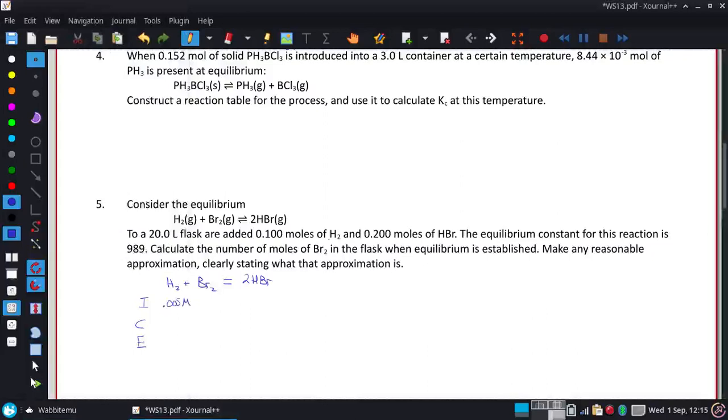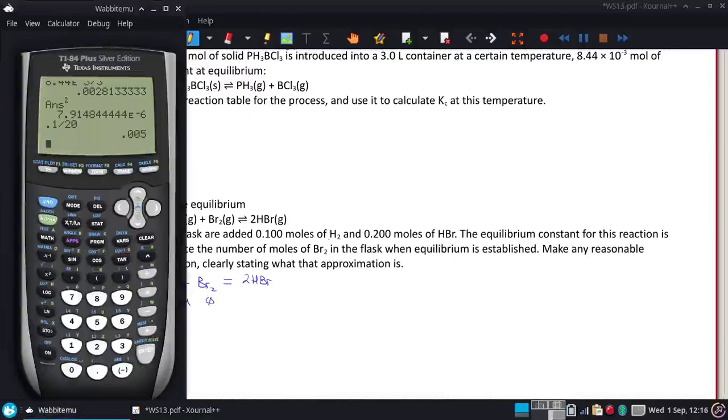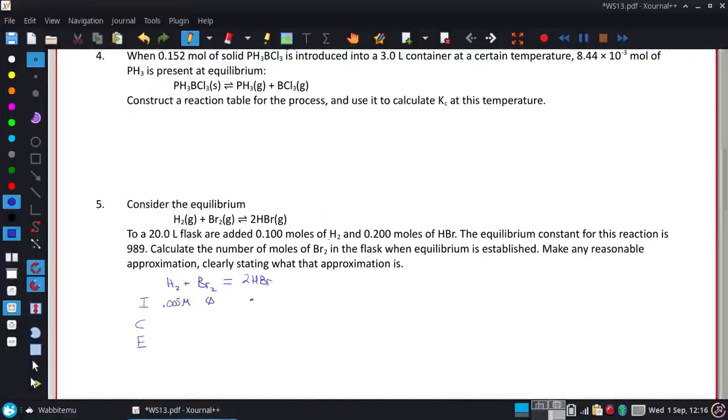And I'll put an M to stress that it's molarity. Nothing listed for the bromine, so I assume it's 0. And the HBr is exactly double, 0.2, but I am going to type it in, 0.2 divided by the 20 to see that that is 0.01 molar. Now, both of those are really three significant figures. I just left off the significant figures to make it easier to follow along.